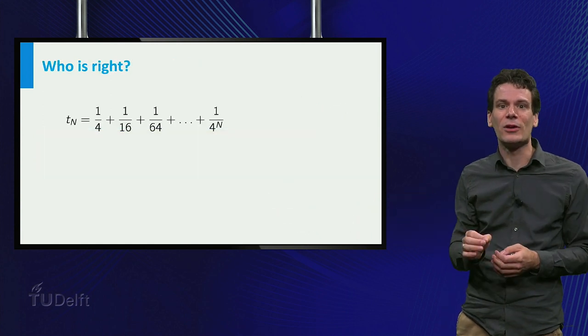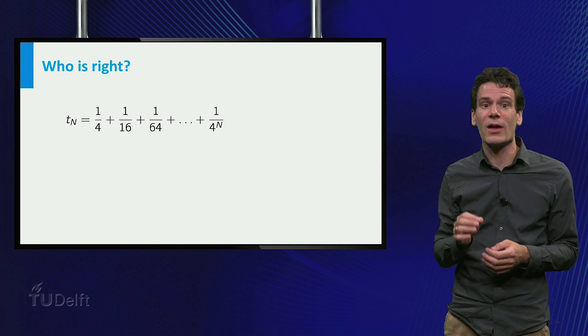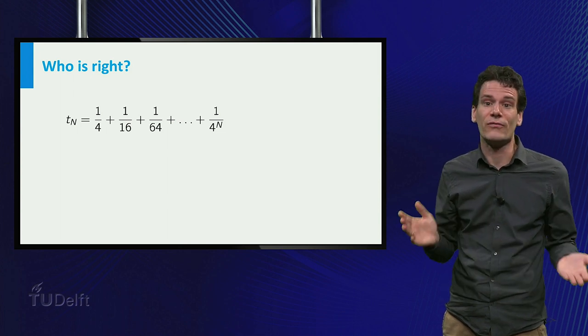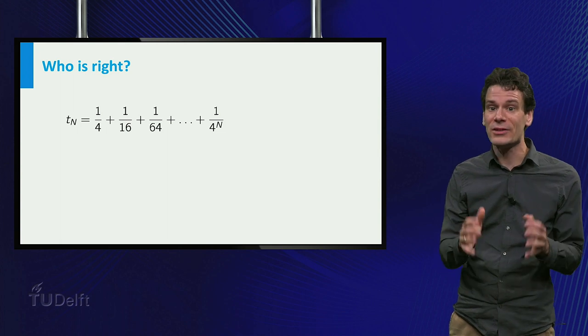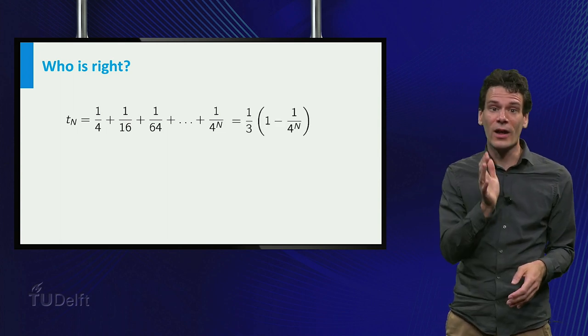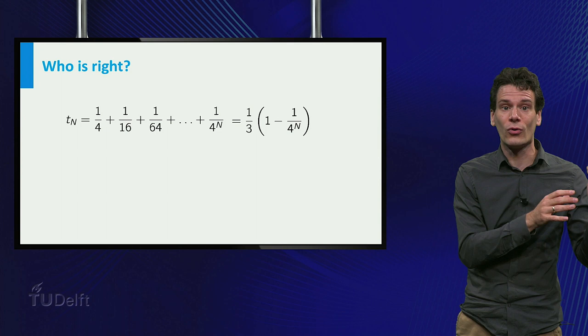The way to analyze this is as follows. Consider the time elapsed after n steps. This is a finite sum, and it turns out that it can be compactly written as 1 third times 1 minus 1 over 4 to the power n.